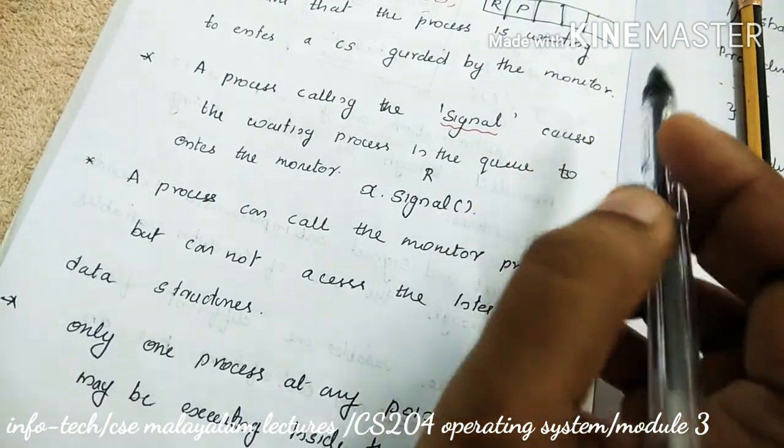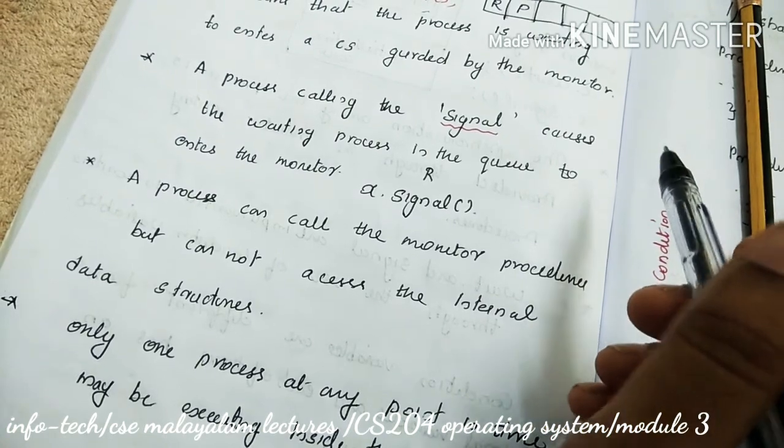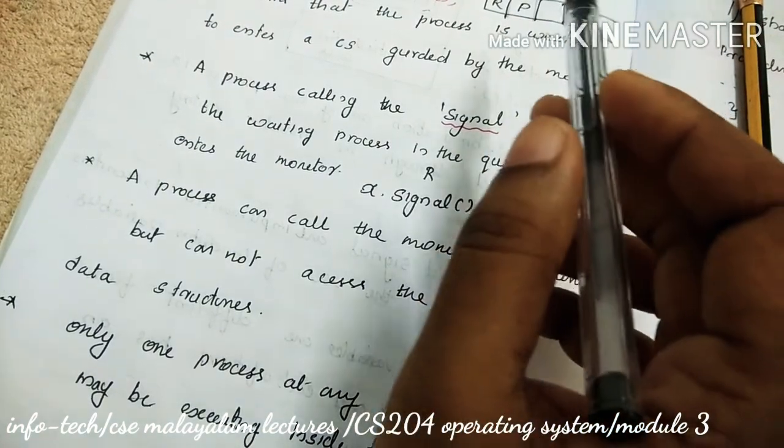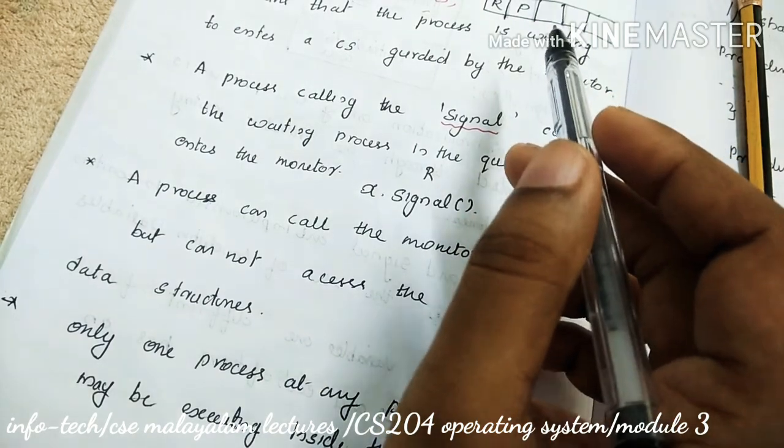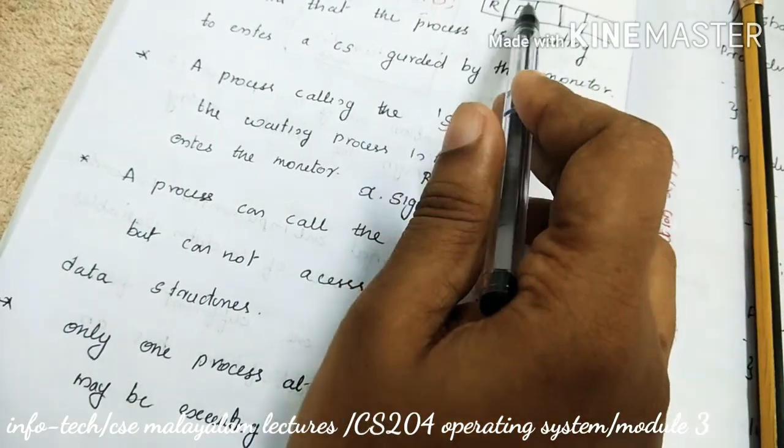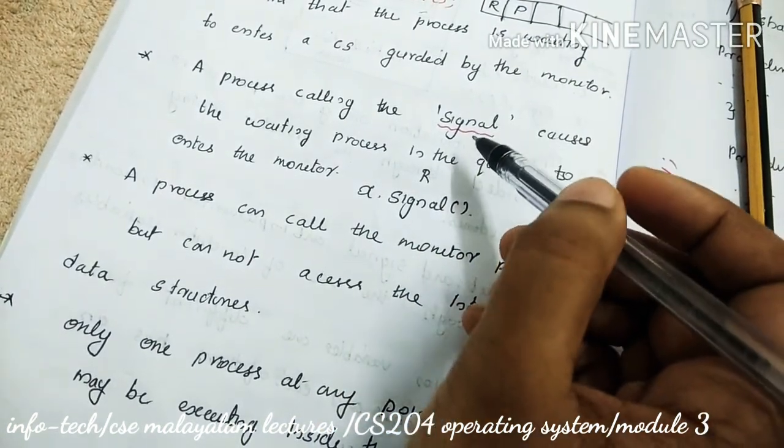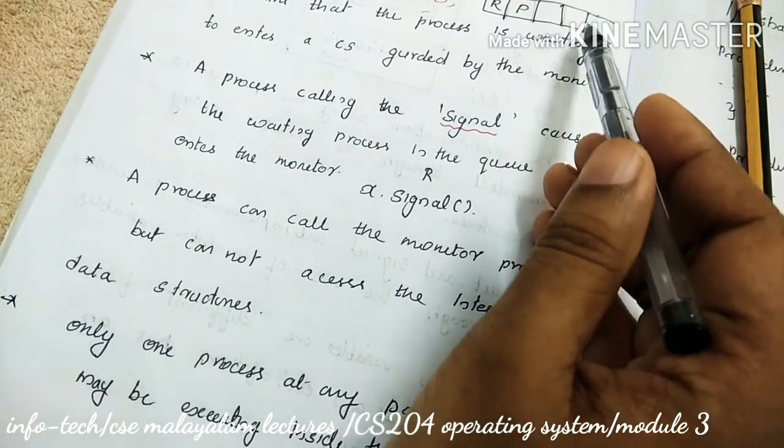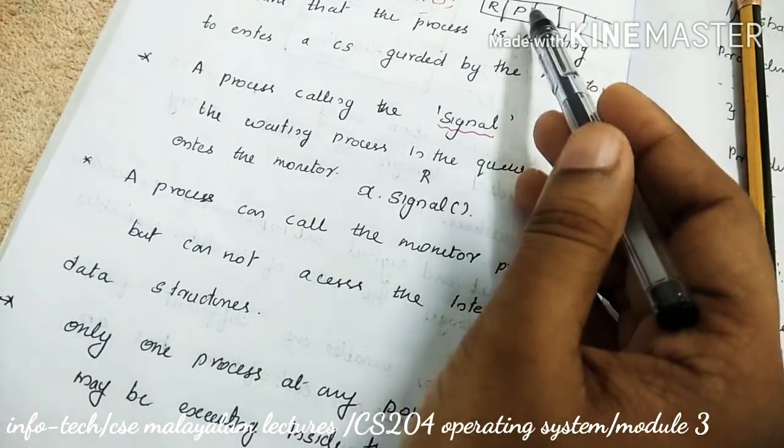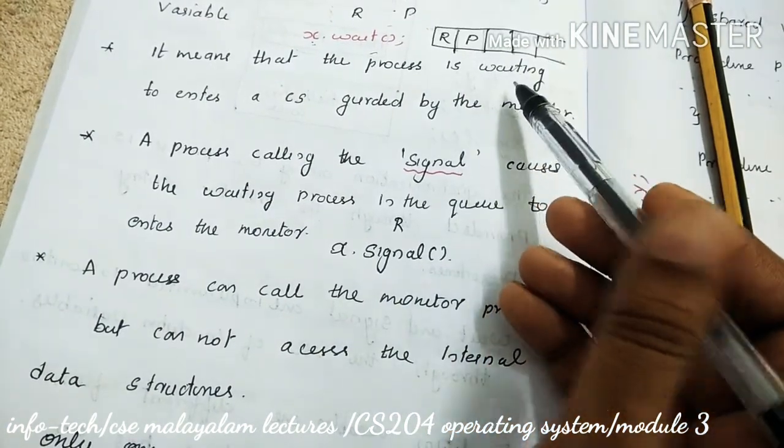Then the queue will resume that suspended state and enter into the ready to use state. The process was waiting, invoked, and it will suspend it. The waiting queue will insert it. When it invokes the signal, that signal operation is invoked, and the suspended process in the waiting queue will wait.